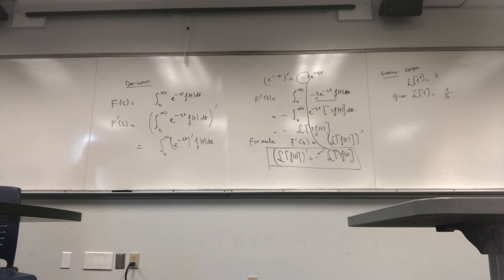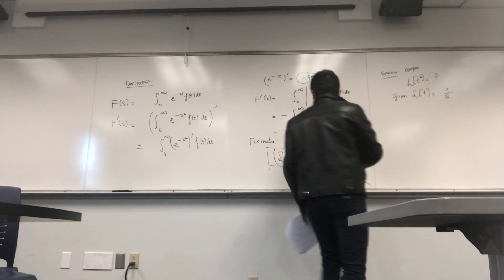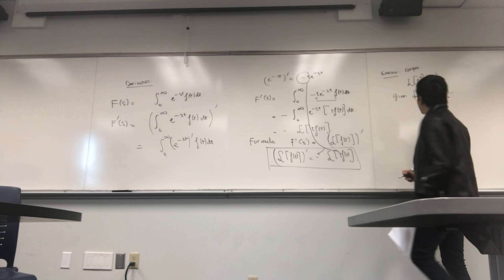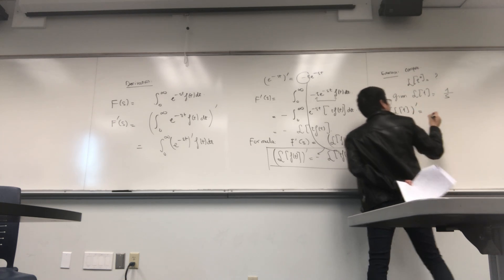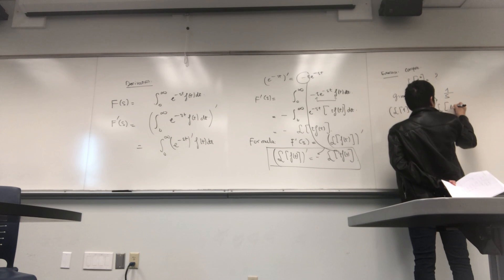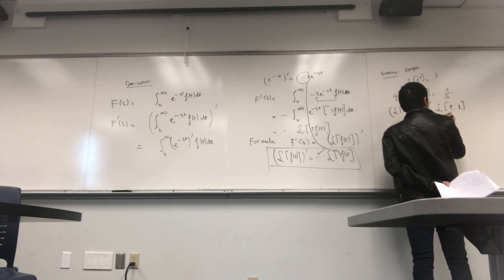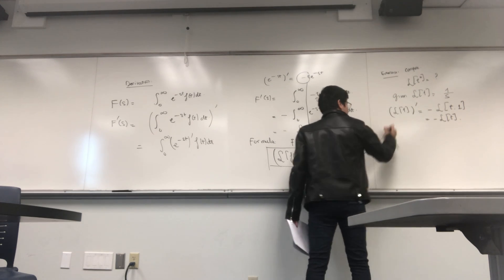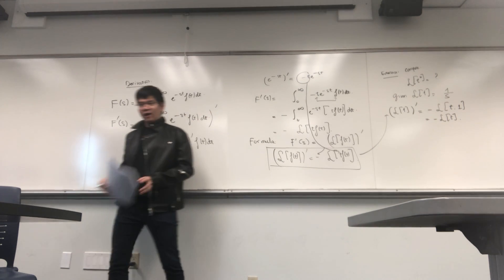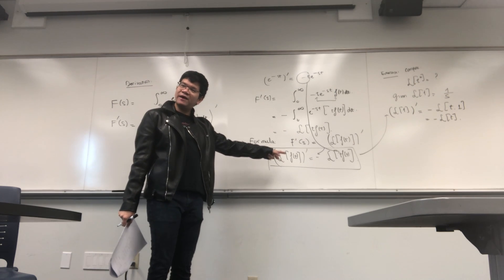We can consider 1 to be t^0, and then use the fact that the Laplace transform of t^1 equals negative times the derivative of the Laplace transform of t^0. We use this formula repeatedly with f = 1.